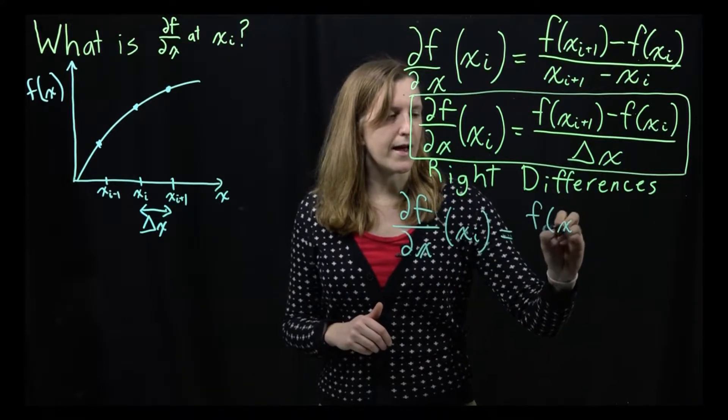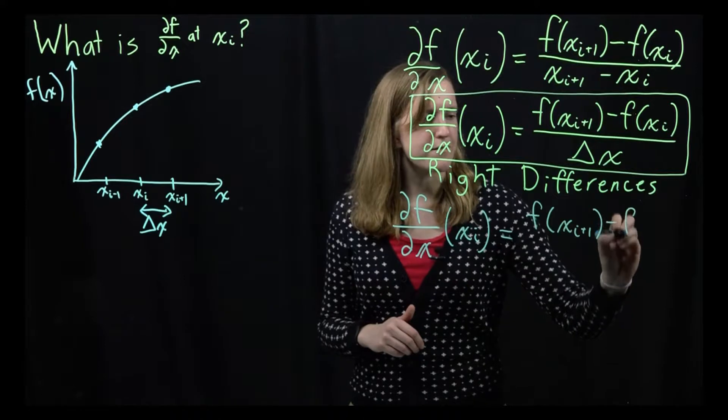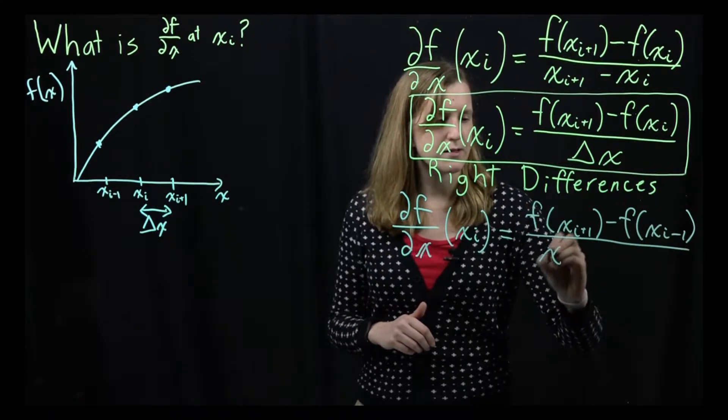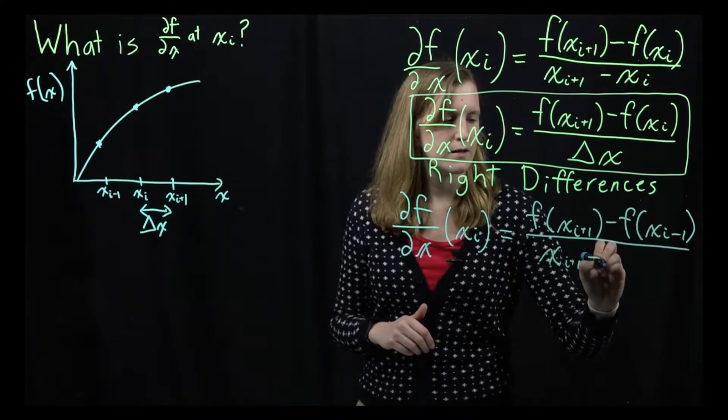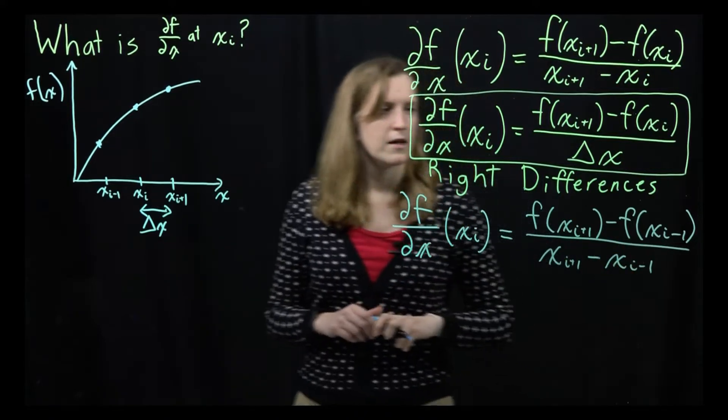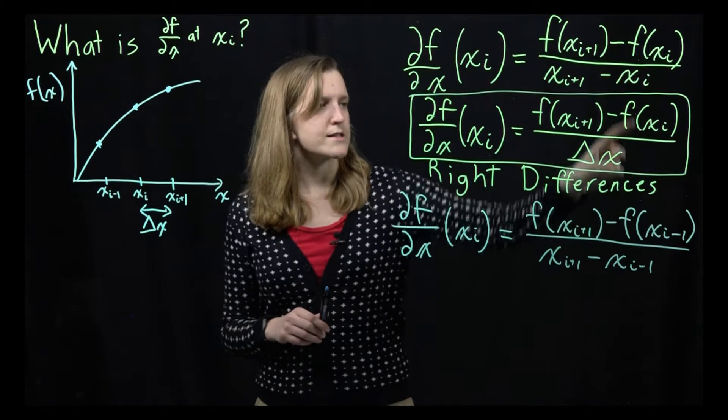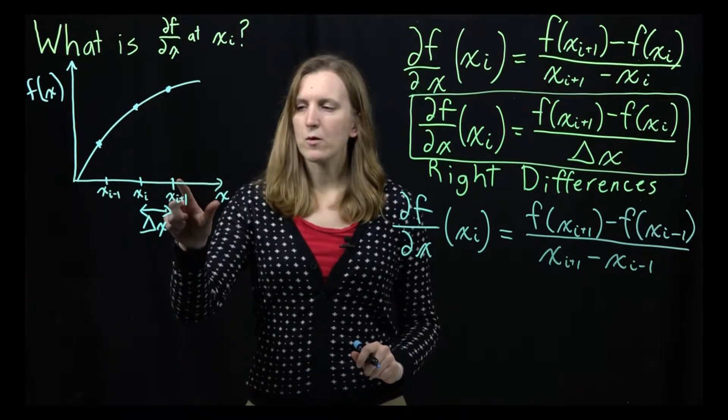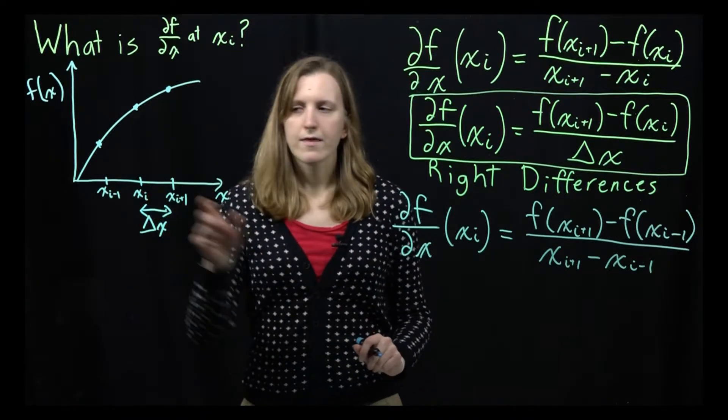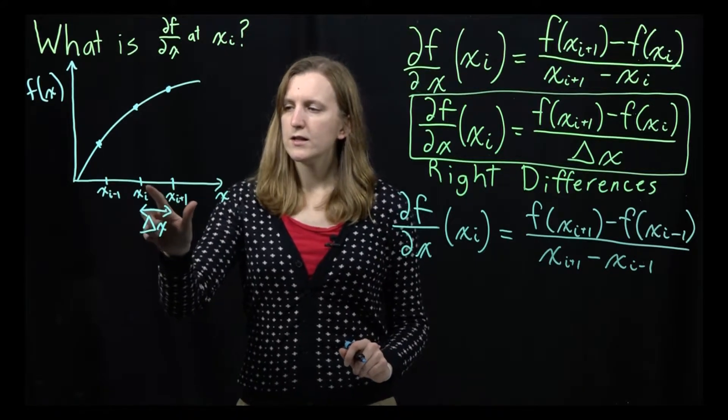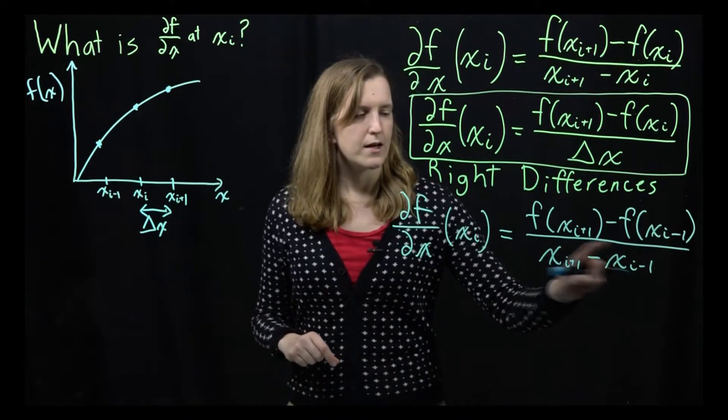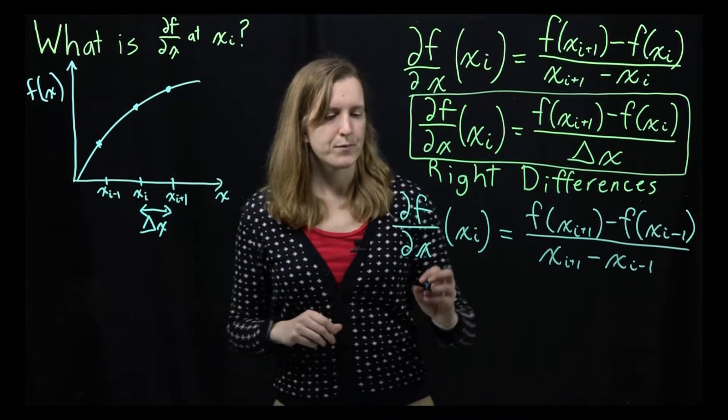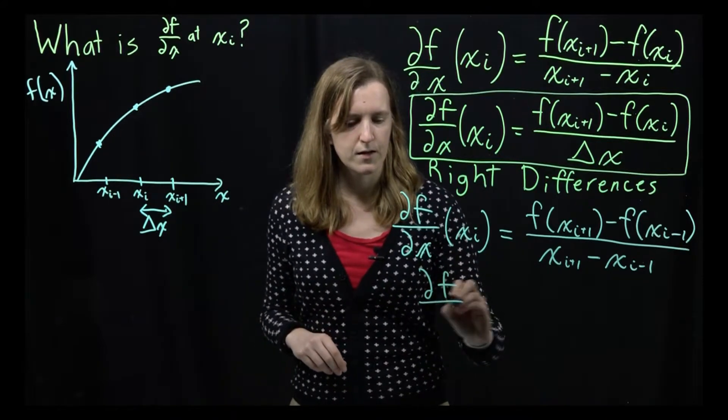So this is f at xi plus one, minus the value of the function at i minus one. And then we just replace our x values. And so you can see that this numerator is just slightly different than the one above. But the denominator, since we're no longer going from one point to the point next to it, but we're going from one point to the second point over, then you see that we have one delta x here, and then another delta x here. So this subtraction just becomes 2 delta x. So there's 2 delta x to go from this point to that point.